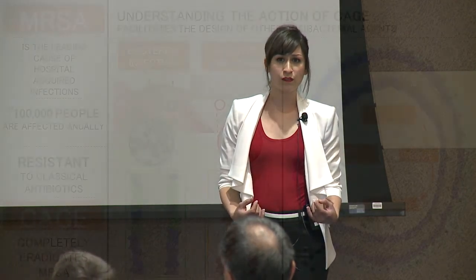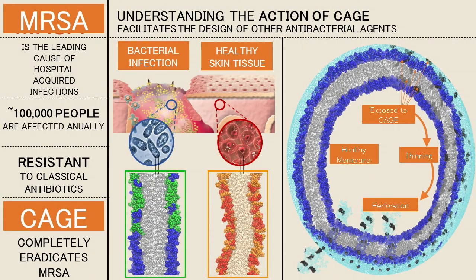We predict the movement of molecules in my research with computer simulations. My research is inspired by the fight to eliminate infections like MRSA, a treatment-resistant bacterial infection that claims the lives of more than 2,000 people each year. Fortunately, a new antibacterial with an unpronounceable name — so we're calling it CAGE — has been found to completely eradicate MRSA. It's even more effective than bleach, but unlike bleach, CAGE won't hurt your skin.